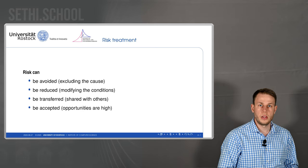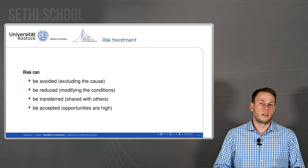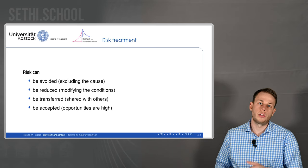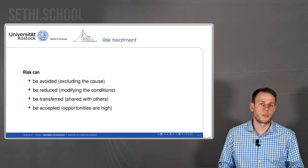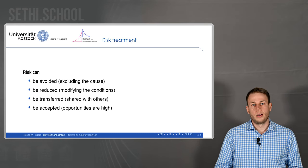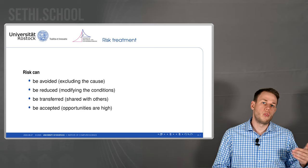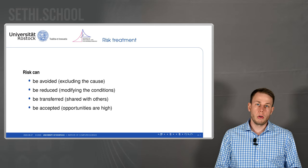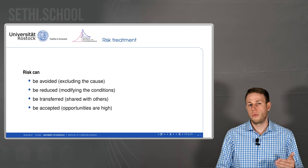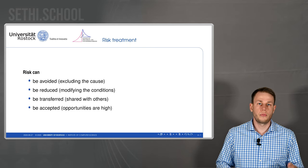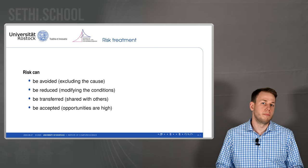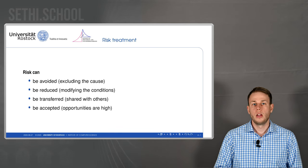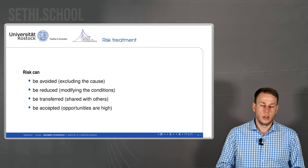Risks can also be transferred — for example, if you sign an insurance. An insurance means another company is taking the risk for you, and you pay them for that — so you share the risk with others. You can also accept the risk. If you have a very rarely occurring event, you can just accept it and say: I know about this risk, but it occurs so infrequently that I just accept it. If it occurs, that's bad luck, but we won't take effort beforehand to decrease it.